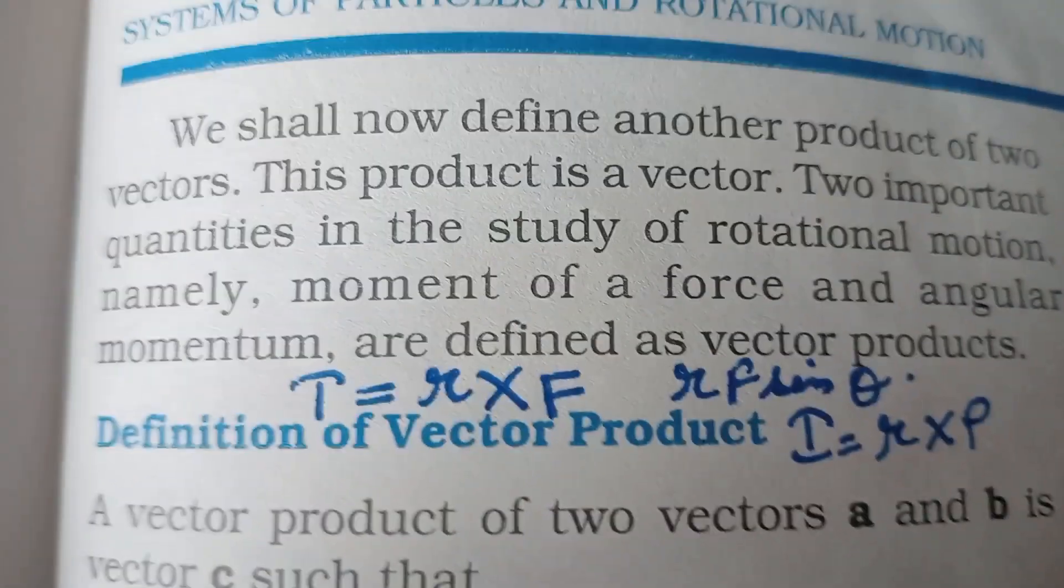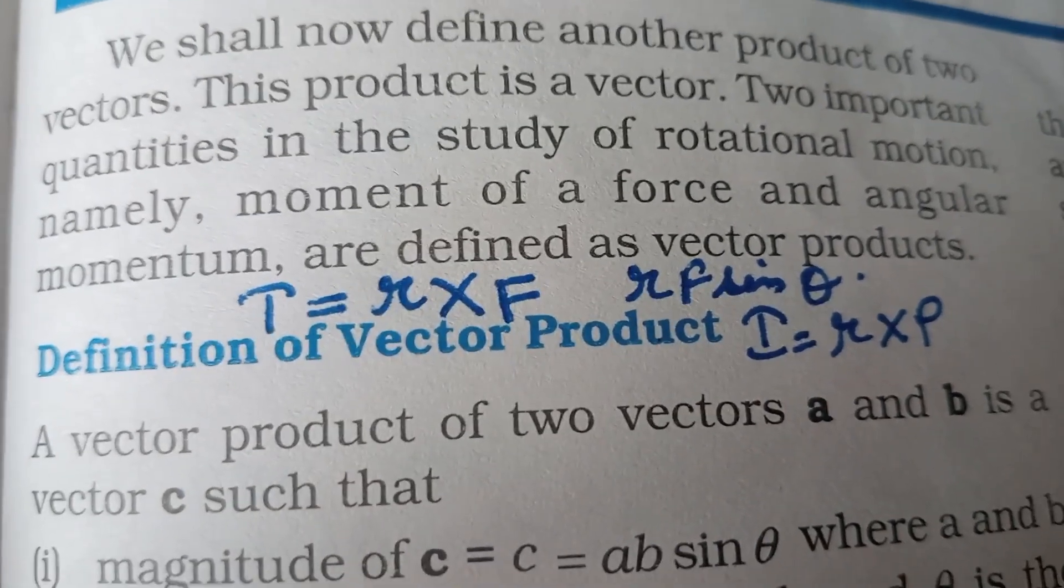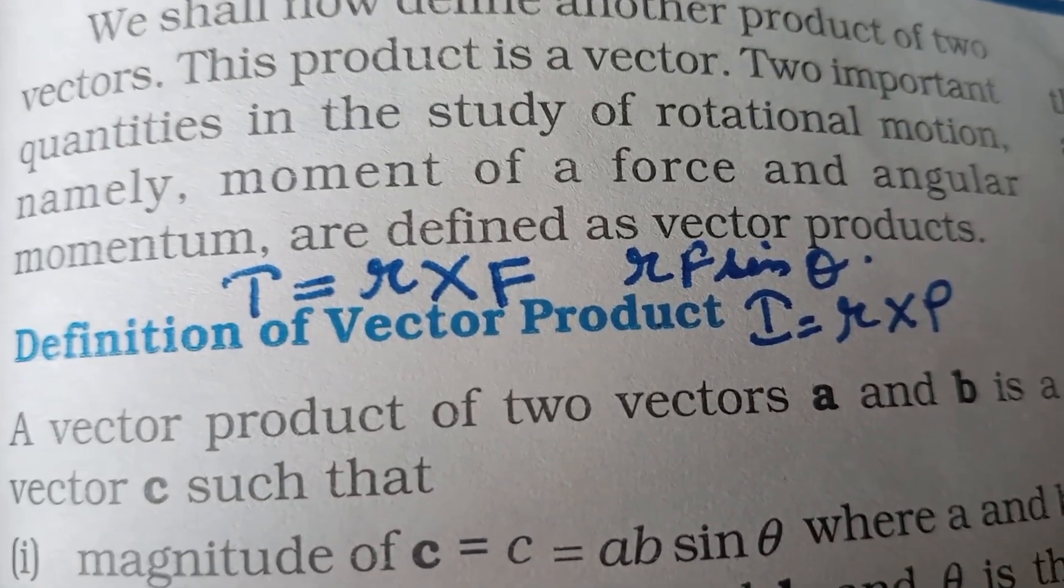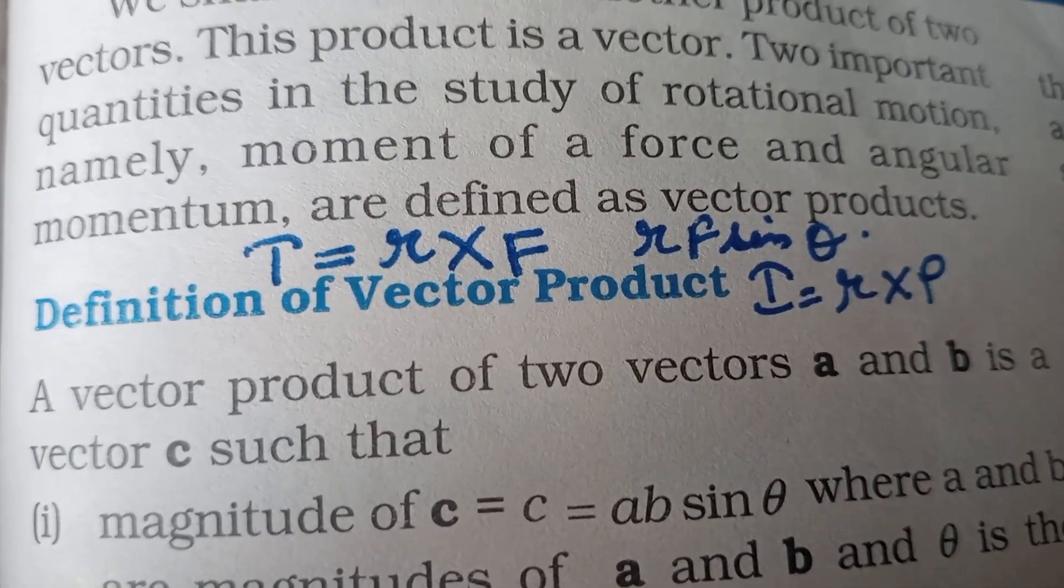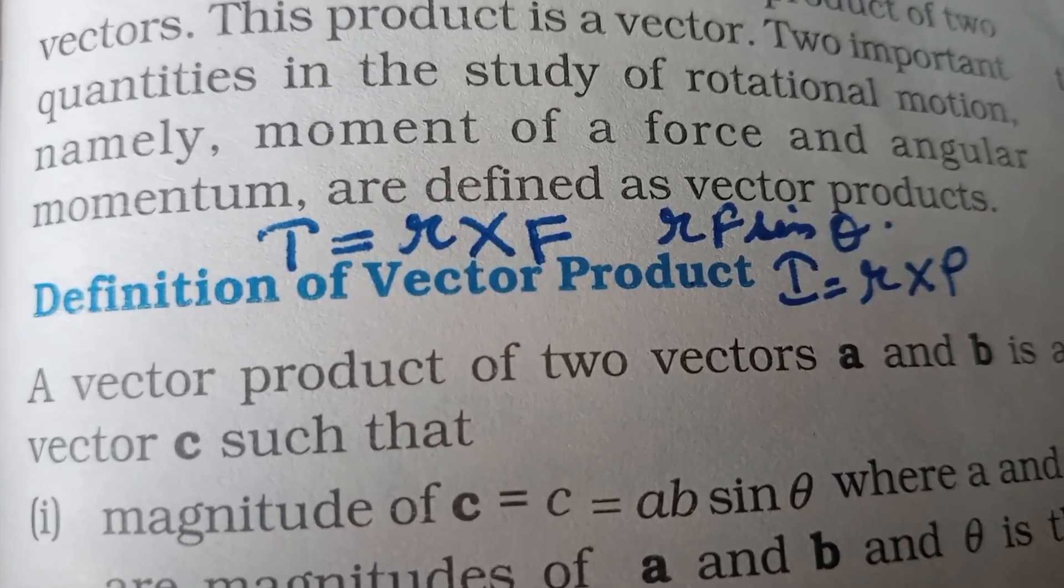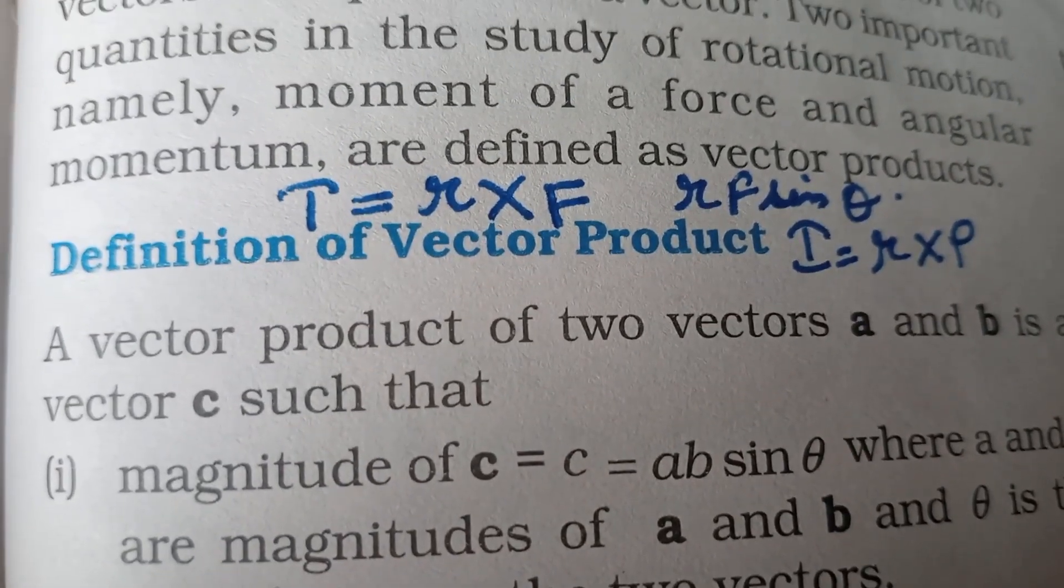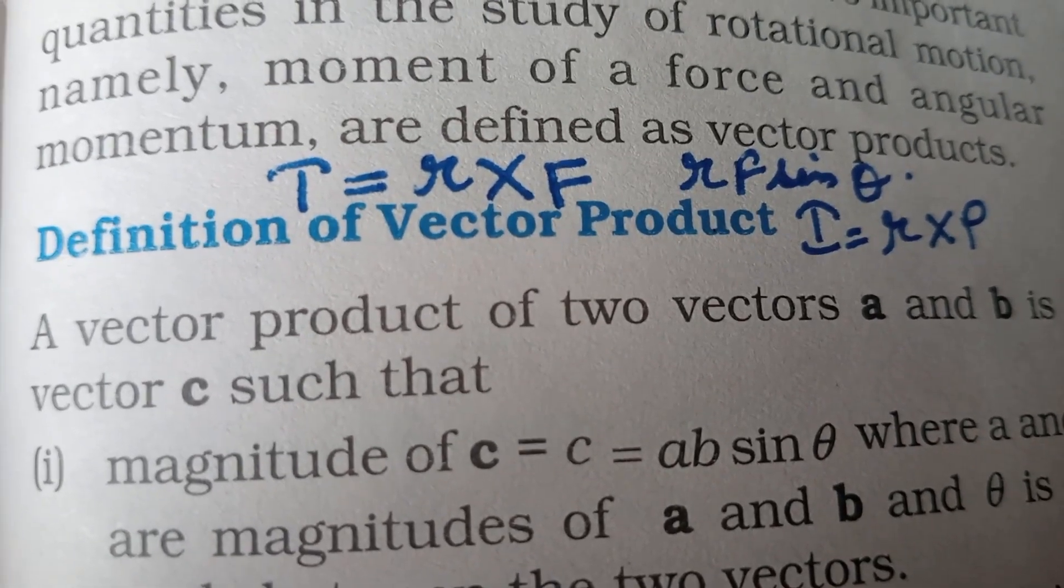We shall now define another product of two vectors. This product is a vector. Two important quantities in the study of rotational motion, namely torque and angular momentum, are defined as vector products. Because torque equals R cross F, where R is position vector and F is force.